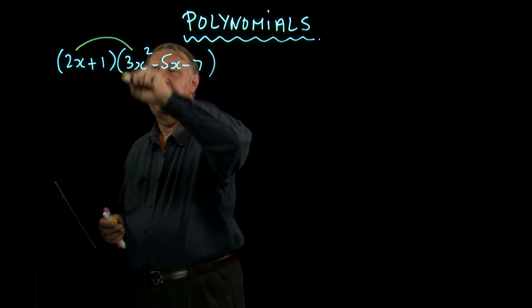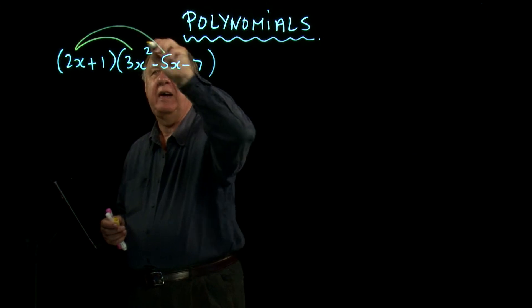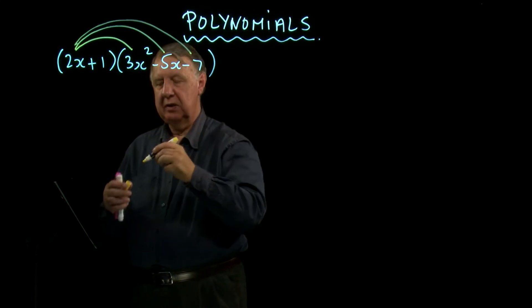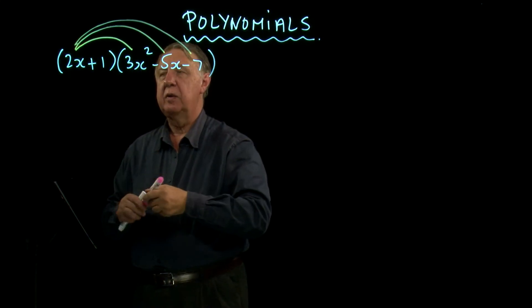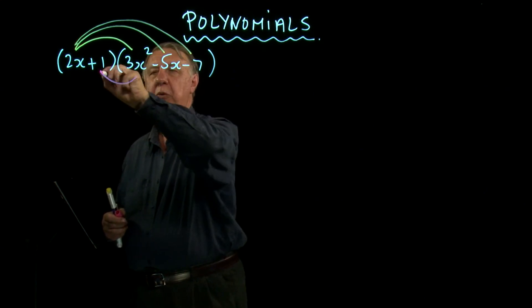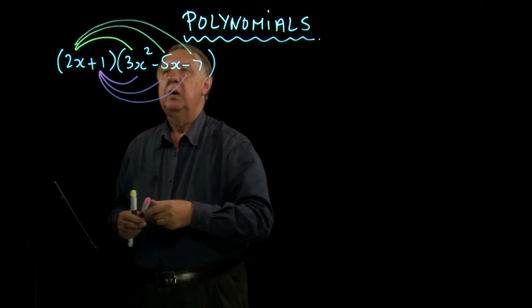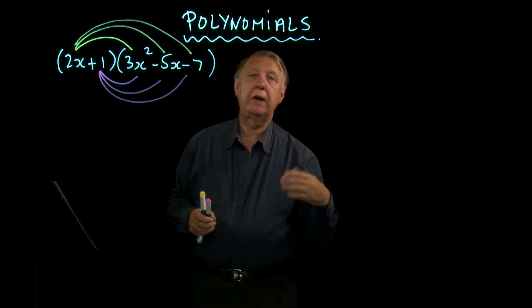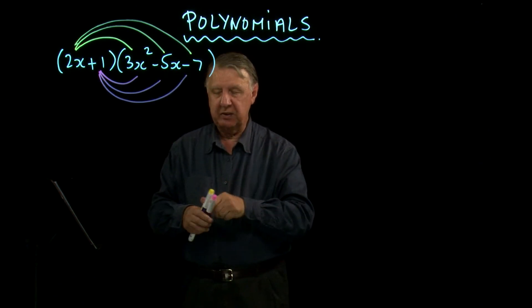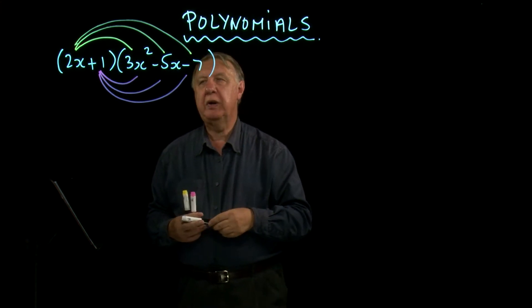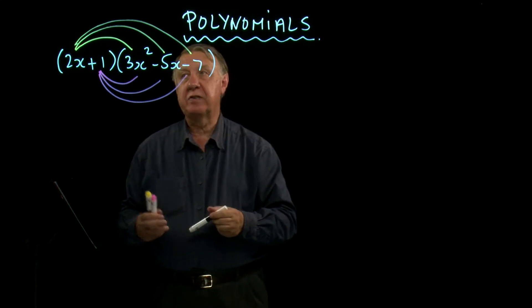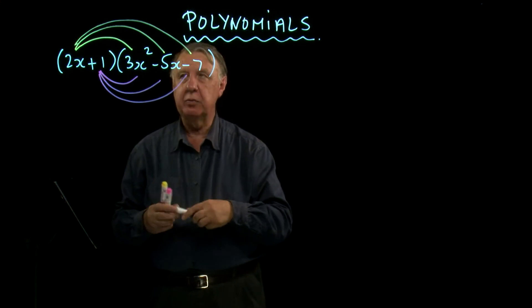So that is multiplying that, that and that, and then the plus 1 multiplies that, that and that. Mentally you should be saying how many terms do I expect to get. So here you expect to get 6. We've got 3 yellow terms and 3 pink terms.